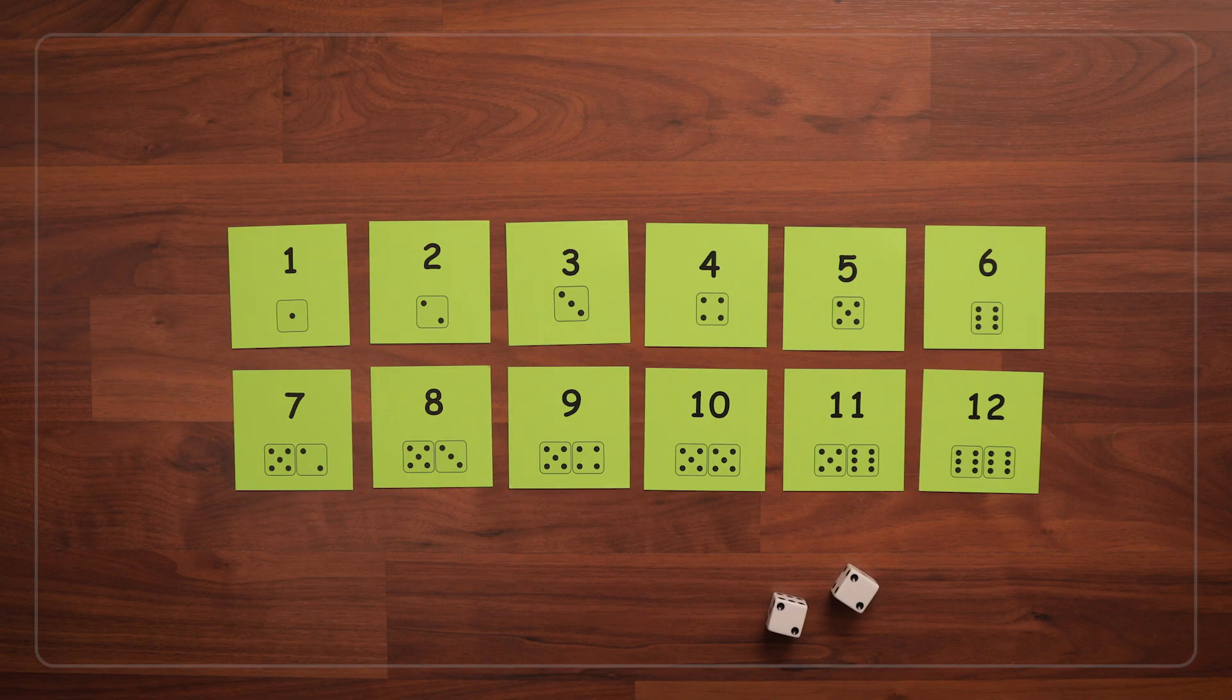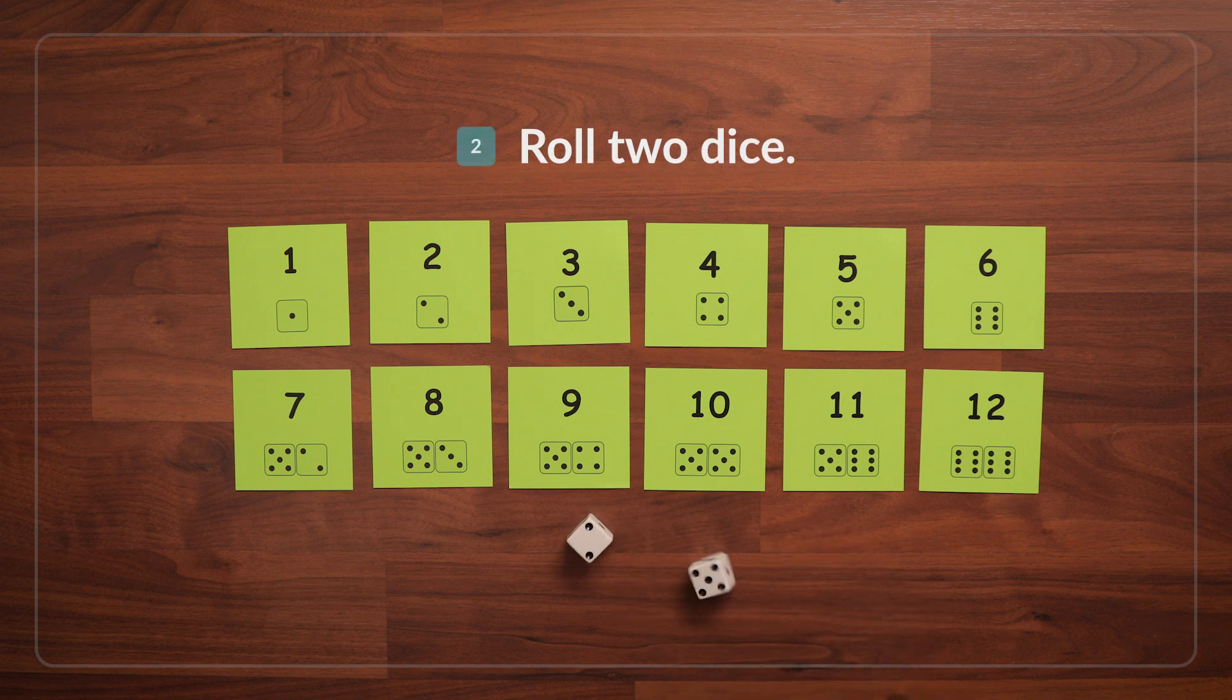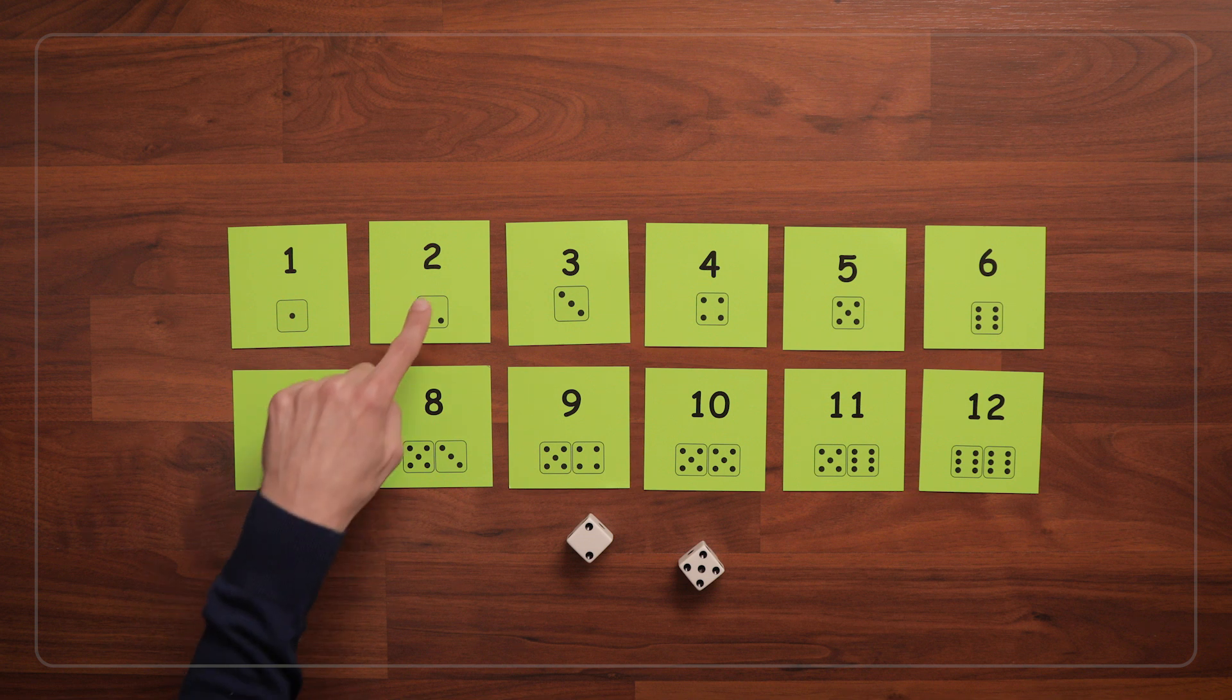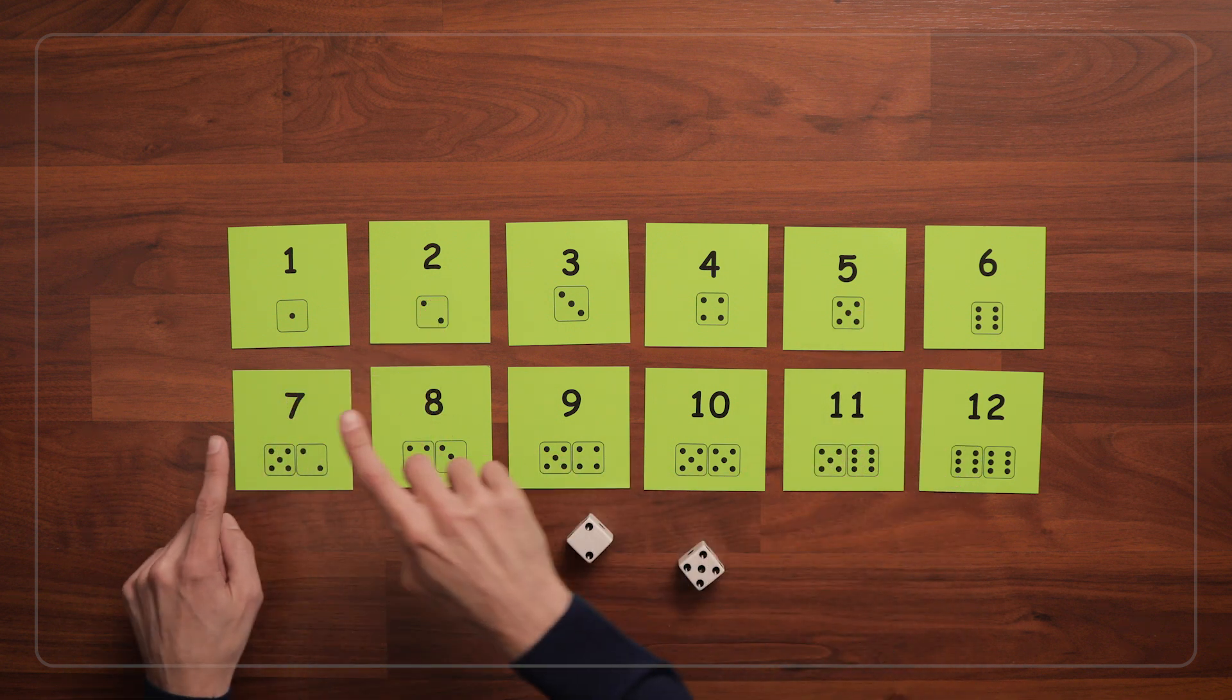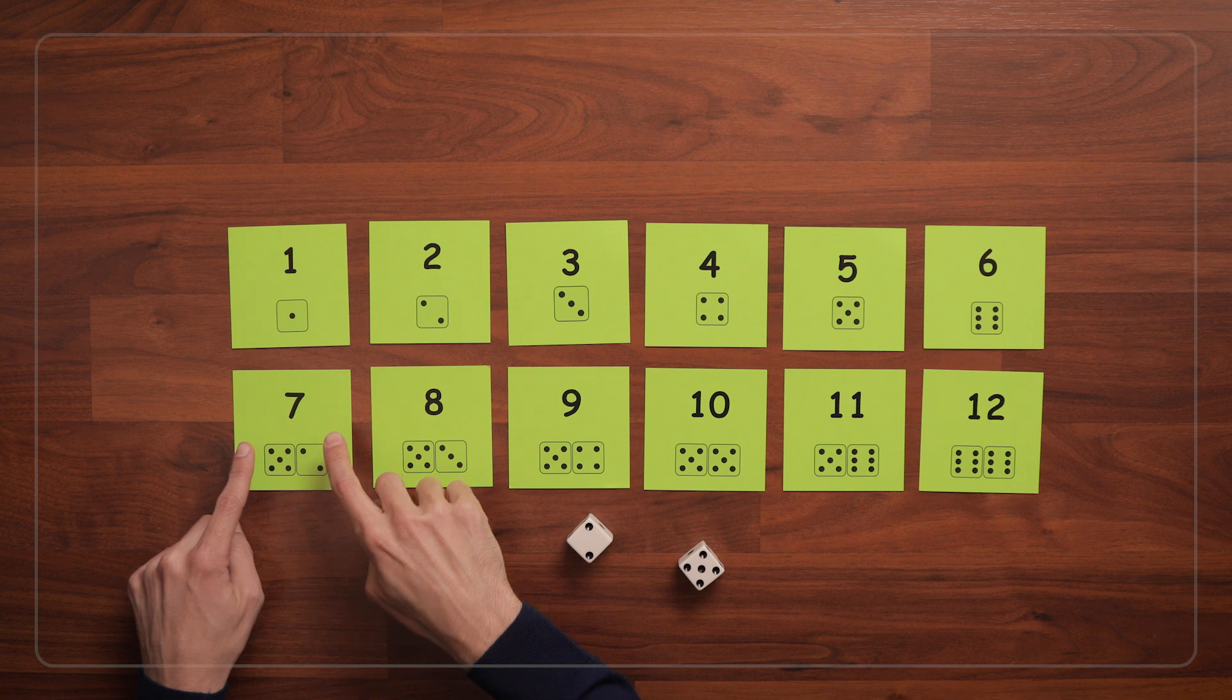Now that the cards are laid out, we'll roll both dice. I got a 2 and a 5. So I can turn over my 2 and my 5, or I can add these together and turn over my 7 card.